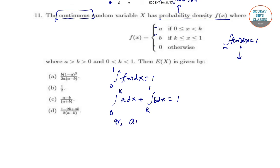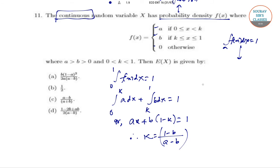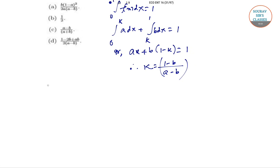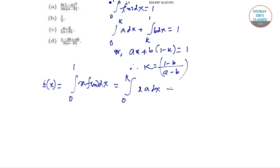This gives us a·k + b·(1 − k) = 1, so k = (1 − b) / (a − b). With k determined, we can proceed to find the expectation. The expectation E(x) is the integral from 0 to 1 of x·f(x) dx, which becomes the integral from 0 to k of x·a dx plus the integral from k to 1 of x·b dx.